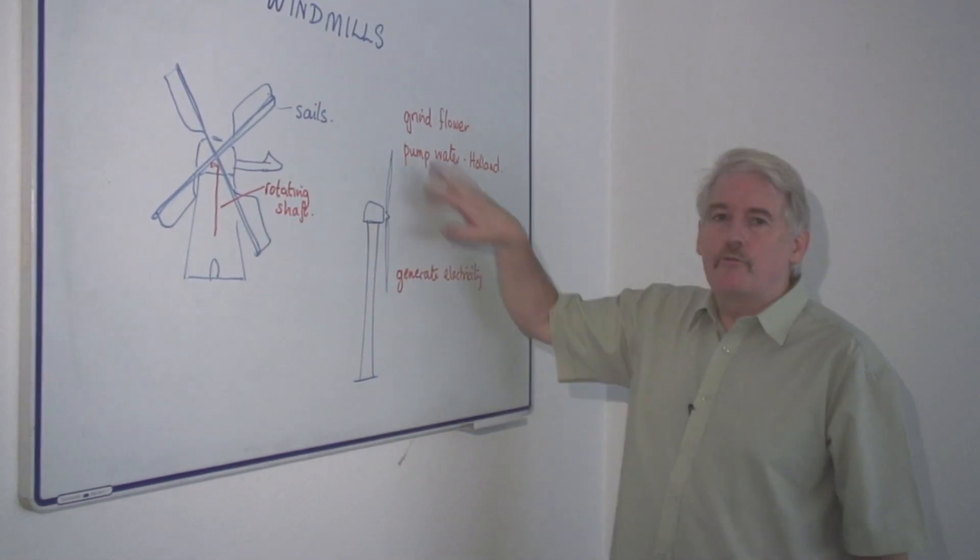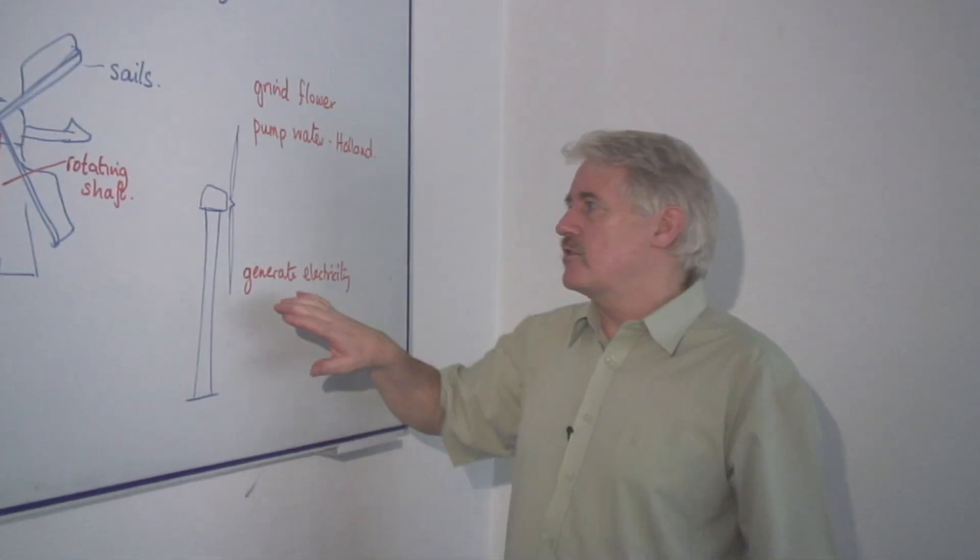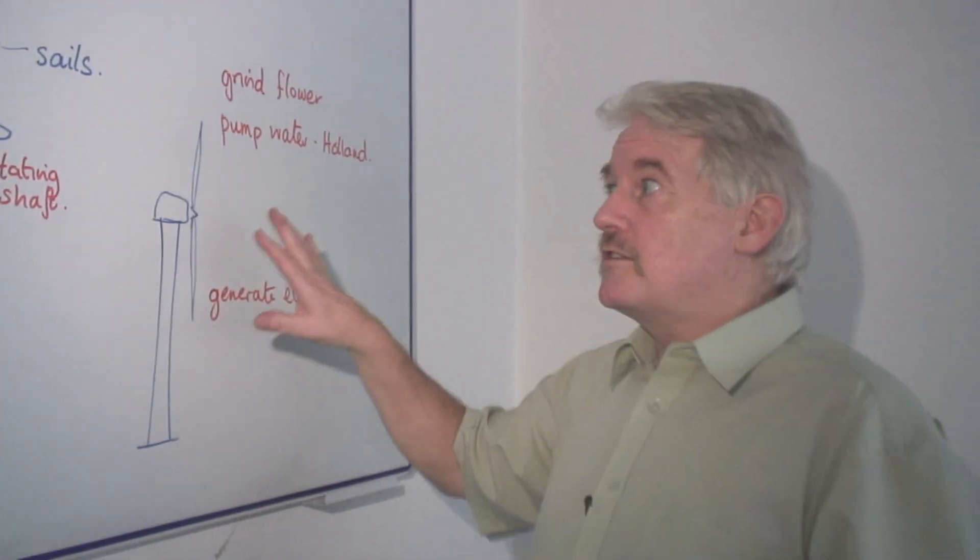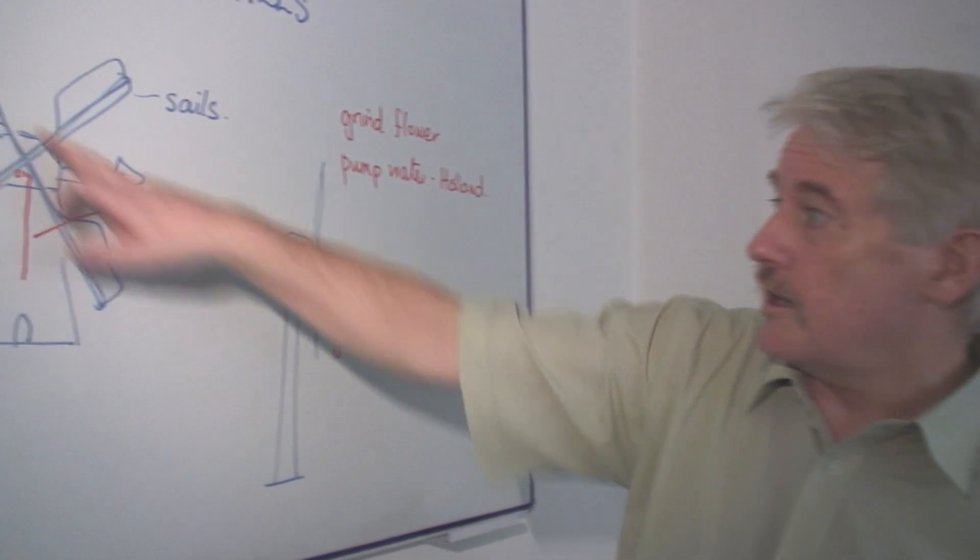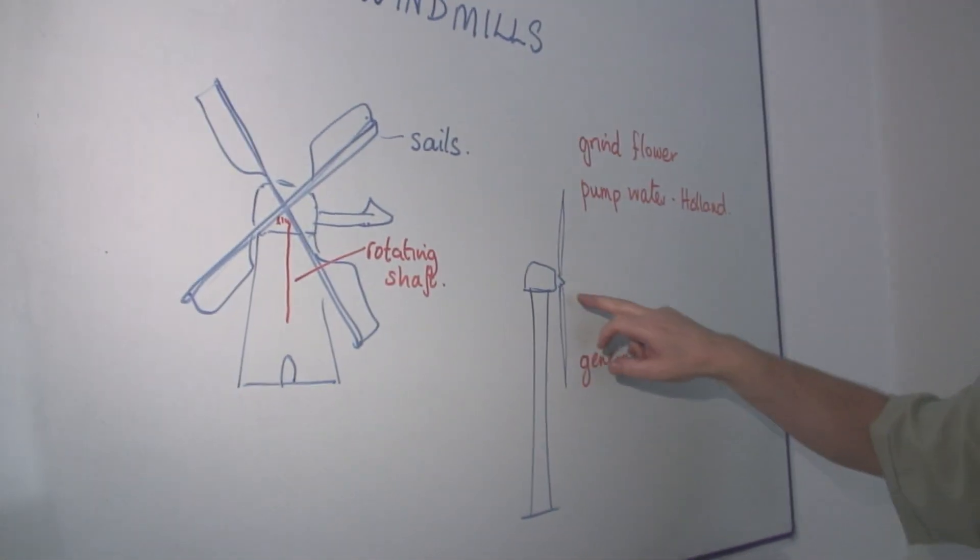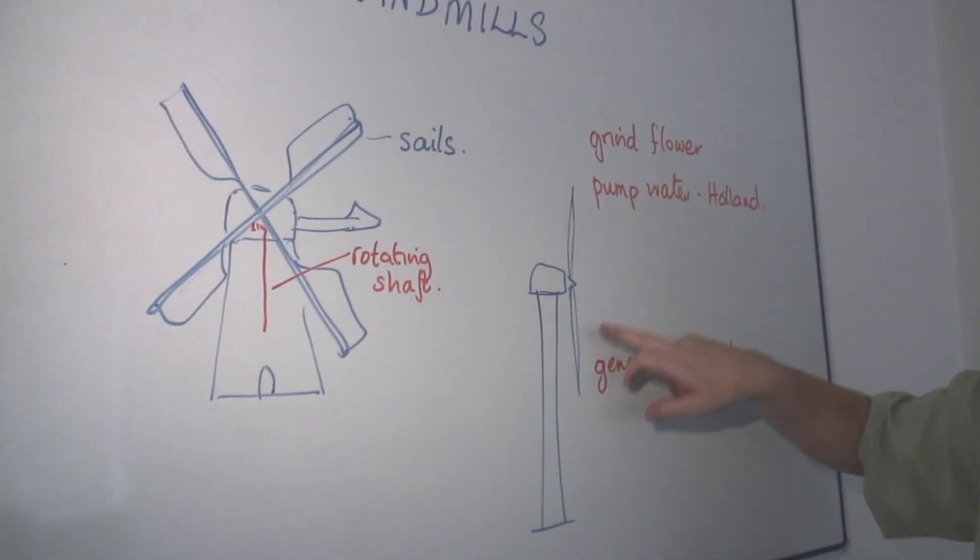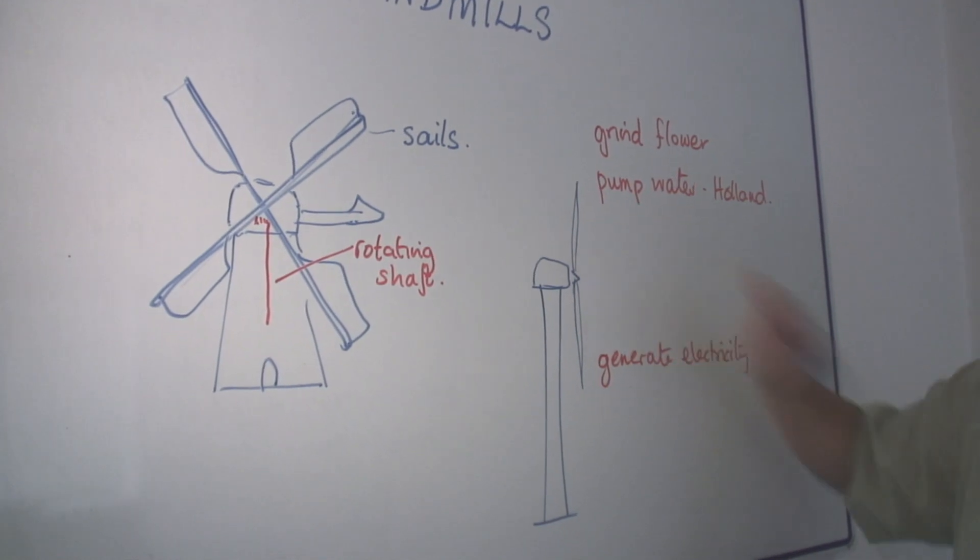And you'll see also the modern type of windmill. The principle is very much the same and it consists of sails in the case of an old mill, we call them sails, and here you have the blades of a propeller on a modern mill.